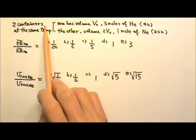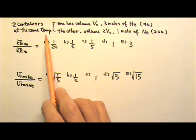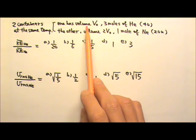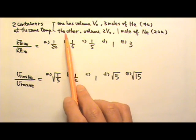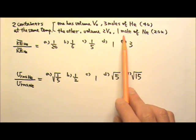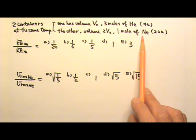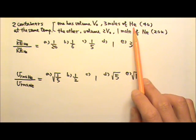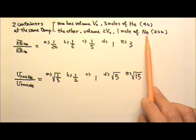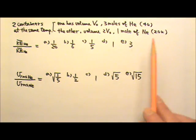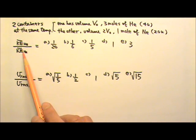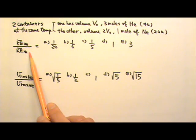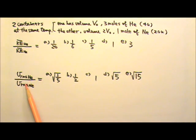There are two containers holding gases at the same temperature. One container has volume V₀ holding three moles of helium gas. The other has volume 2V₀ holding one mole of neon gas. The molecular mass for helium is 4u and for neon is 20u. We're looking for the ratio of average kinetic energy for helium to neon, and the ratio of root mean square speed for helium to neon.